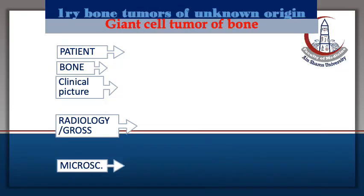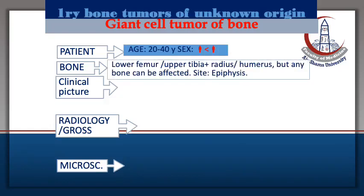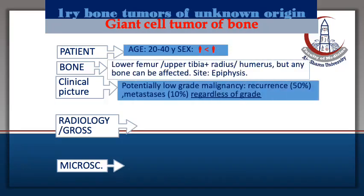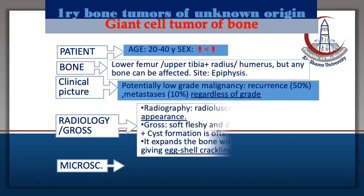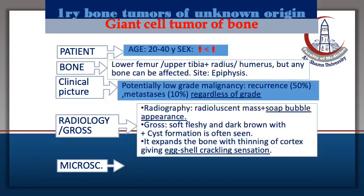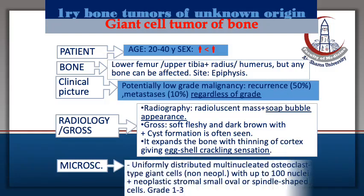Giant cell tumor is of unknown cell of origin. It occurs in middle-aged females and affects the epiphysis of the long bones. It is a low malignant potential tumor. It is an osteolytic lesion with soap bubble calcification on radiology. Under the microscope it shows two components: mononuclear cells and multinucleated giant cells.